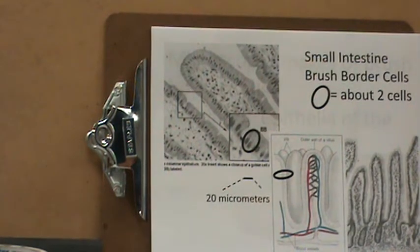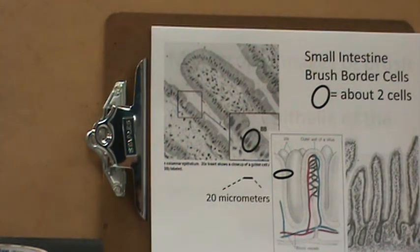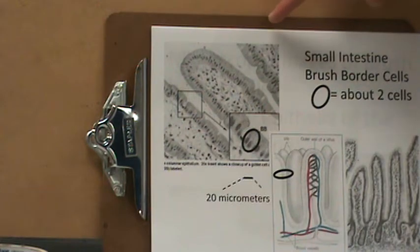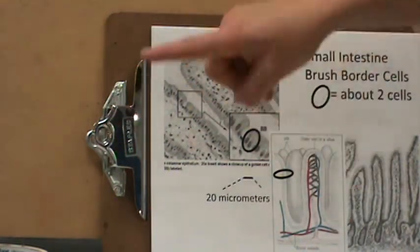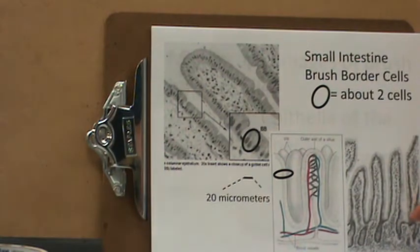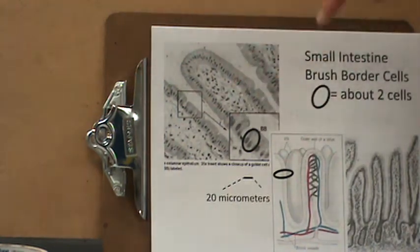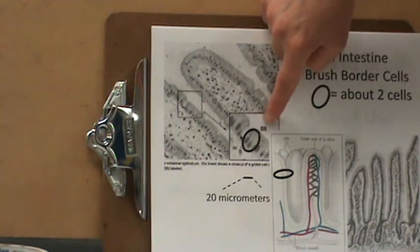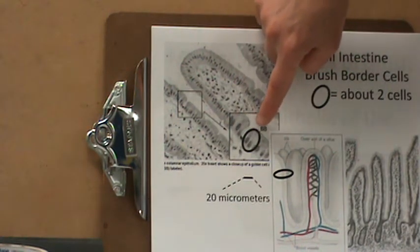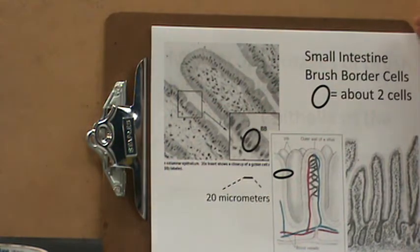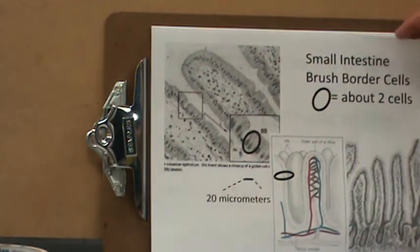The cells are the brush border cells of the small intestine. Along the tube, the tissue is making long, folded structures. This is the tissue. And if we look closer, the brush border cells — for example, two right here — are about two micrometers wide.